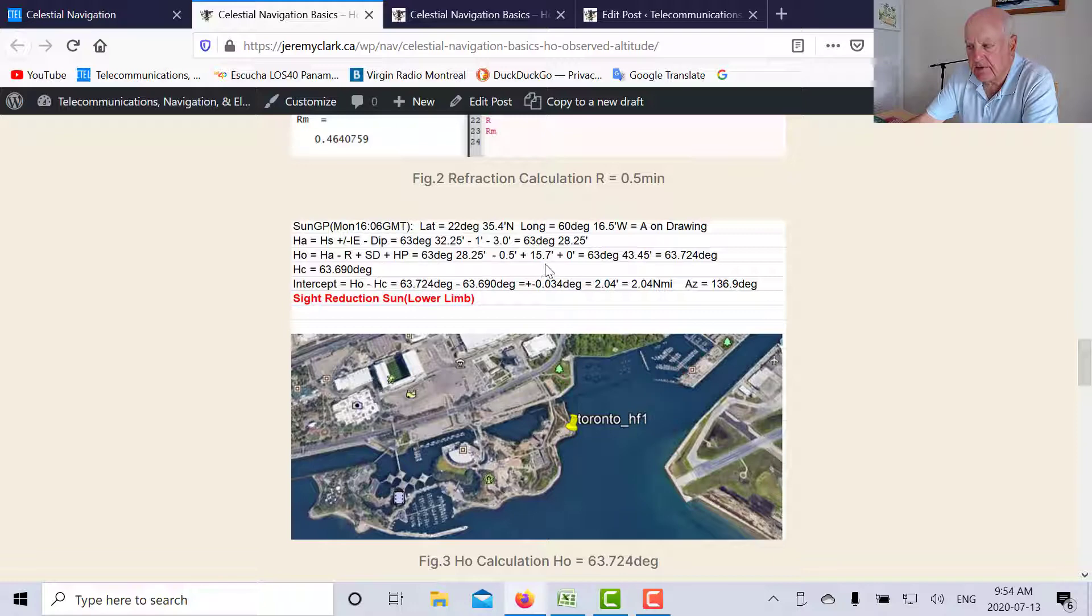Then we had to add the semi-diameter to bring our observed value to the center of the Sun, and that was 15.7 minutes which we got from the nautical almanac. So that gave us an HO of 63 degrees 43.45 minutes or 63.724 degrees.